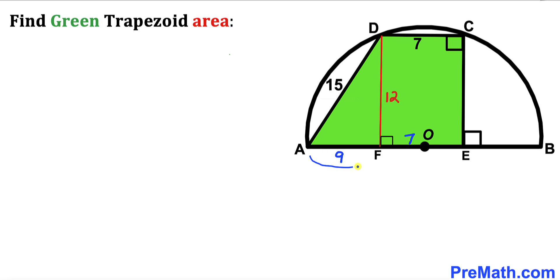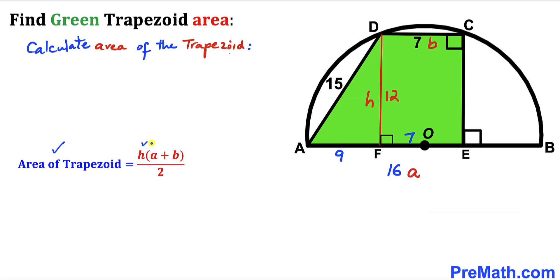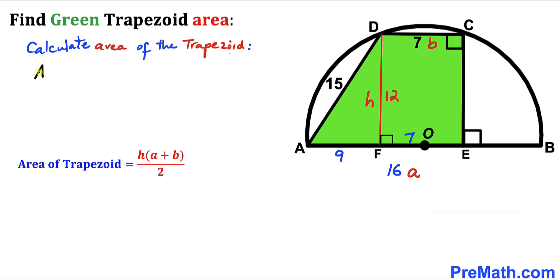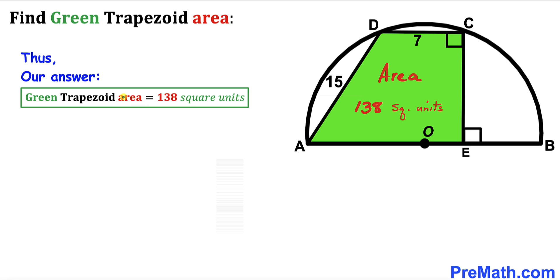Side AE equals 9 plus 7, giving us 16 units. Now for the final step, the area of the trapezoid equals H times (A plus B) all over 2. Our height H is 12, A is 16, and B is 7. So area equals 12 times (16 plus 7) divided by 2, which simplifies to 138. The area of this green trapezoid is 138 square units.